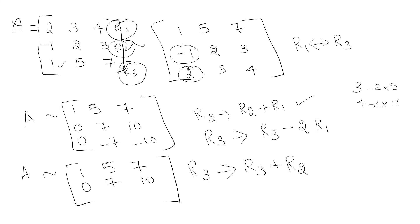So 0 plus 0 is 0, -7 plus 7 is 0, -10 plus 10 is 0. Now if you see here, the number of non-zero rows is only 2.